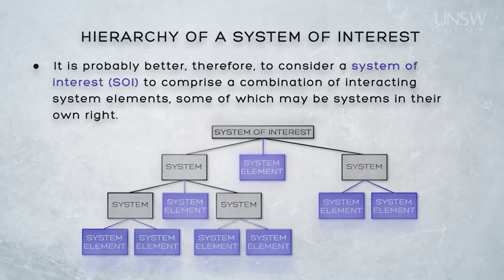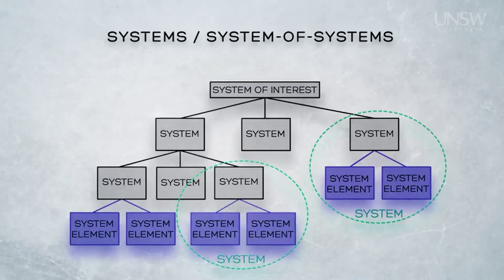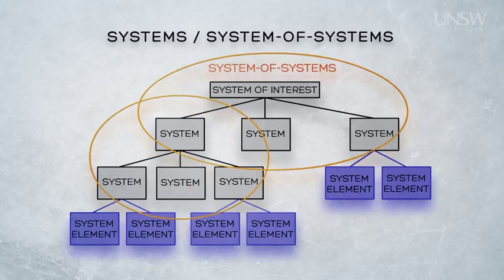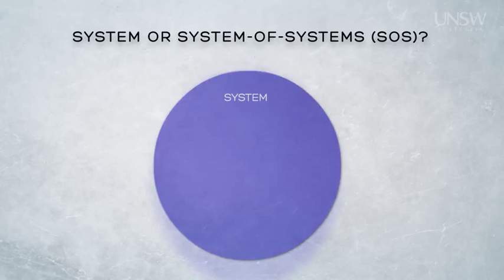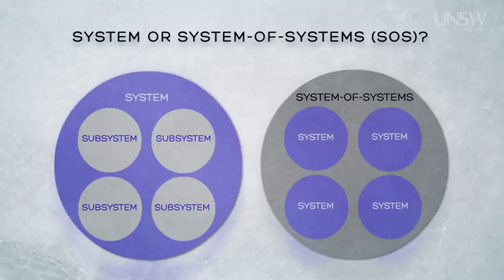A system of systems has a similar architecture to that of a system — both comprise elements that are interconnected. But the difference is that the elements of a system of systems are systems in their own right: they're managerially independent and operationally independent, and have probably been optimised for their own purposes before contributing to the mission of the system of systems. On the other hand, the subsystems within a system are not independent and only exist to serve the parent system. Subsystems are therefore invariably not optimal from their own perspective — they could be better — but it's the system that needs to be optimised, not the subsystems.